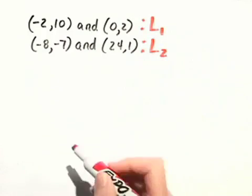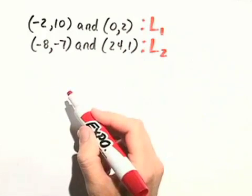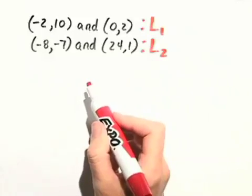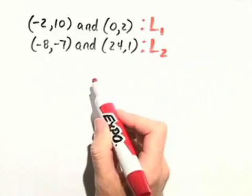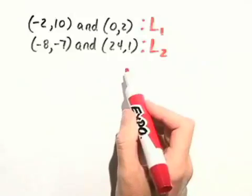Now, if two lines are parallel, their slopes are the same. If two lines are perpendicular, then their slopes are negative reciprocals of each other, or simply the two slopes multiply to equal negative 1.